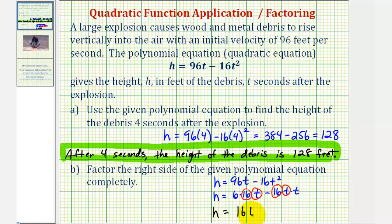So we'll have h equals 16t times the quantity. If we factor out 16t from 96t, we're left with 6. If we factor out 16t from 16t squared, we're left with one factor of t. And now the right side of this equation is factored completely.